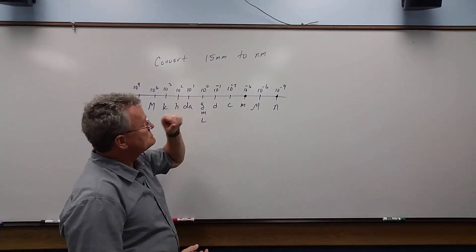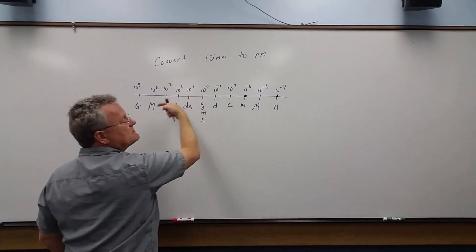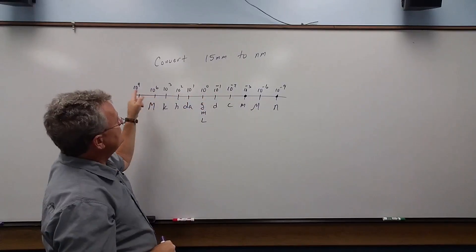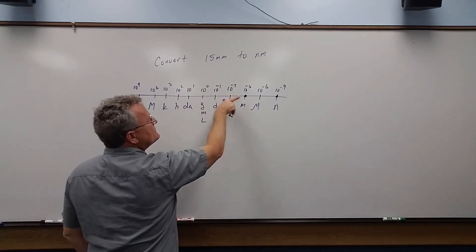So we subtract. Whenever we're going this way, we subtract. When we're going to the left, you can subtract, but you just do it in a different order. So when we're going this way, we subtract this exponent minus this one.